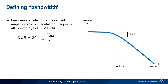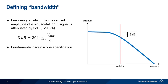The bandwidth of an oscilloscope is defined as the frequency at which the measured amplitude of a sinusoidal input signal is decreased or attenuated by 3 dB. This is the same as an amplitude reduction of about 30%. Note that even at frequencies within the scope's nominal bandwidth, measured signal amplitude may still be lower than the actual amplitude. Also note that even at frequencies above or outside of the scope's bandwidth, measurements are still possible, although amplitude accuracy might be quite low.